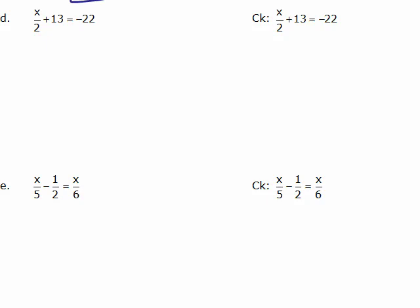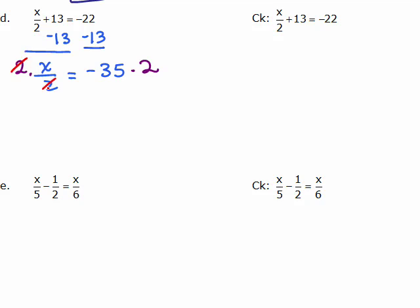Okay, let's go to D. There's more than one way to begin this problem — you can either multiply both sides by 2, or you could subtract 13 first. I'm going to go ahead and subtract 13 first. Subtracting 13 from both sides means I'm going to have my variable left on the left-hand side, x over 2, and negative 22 plus negative 13 is negative 35. Now that says x divided by 2, so I need to multiply both sides by 2, so x equals negative 70.